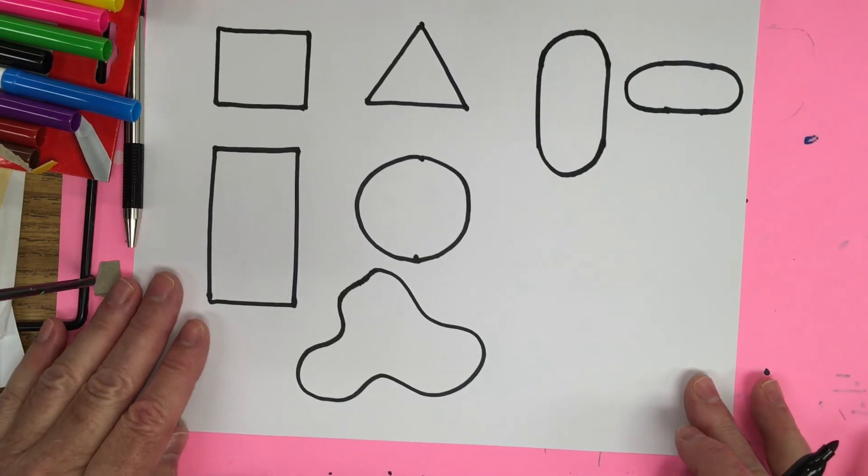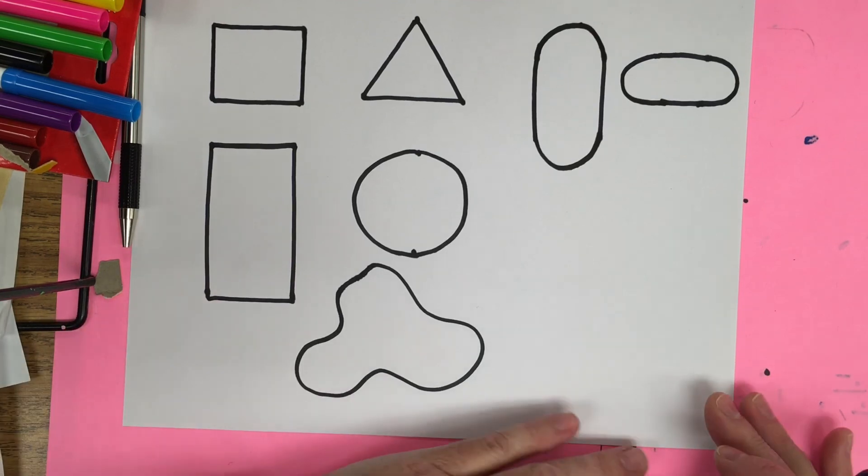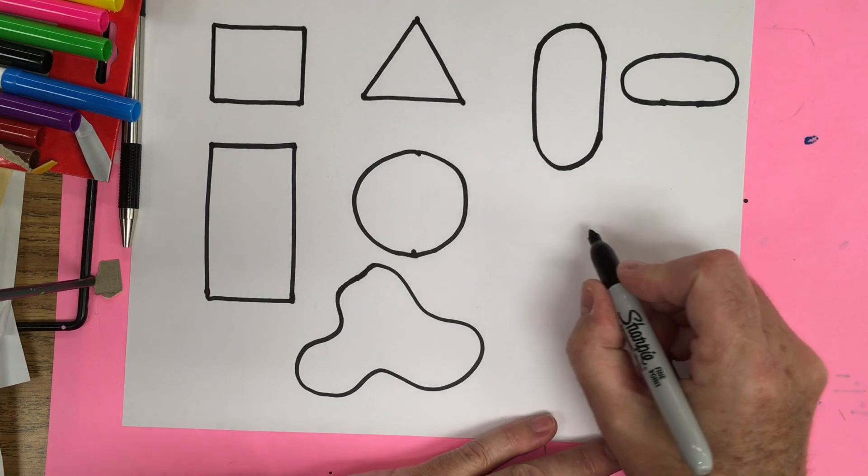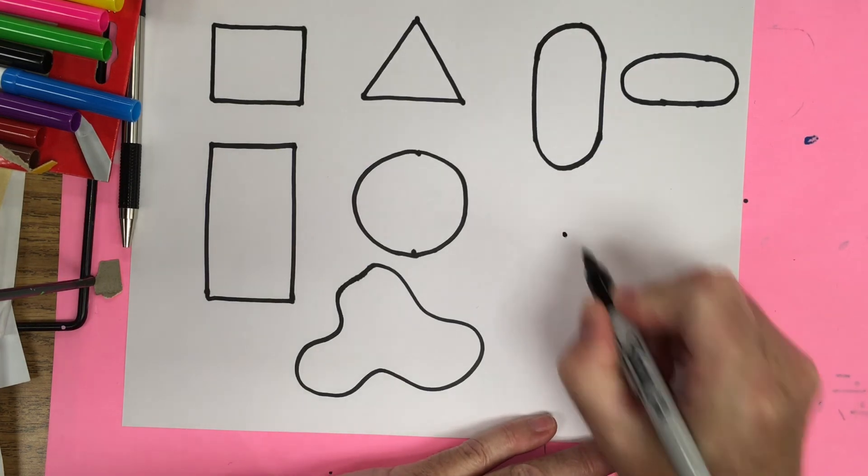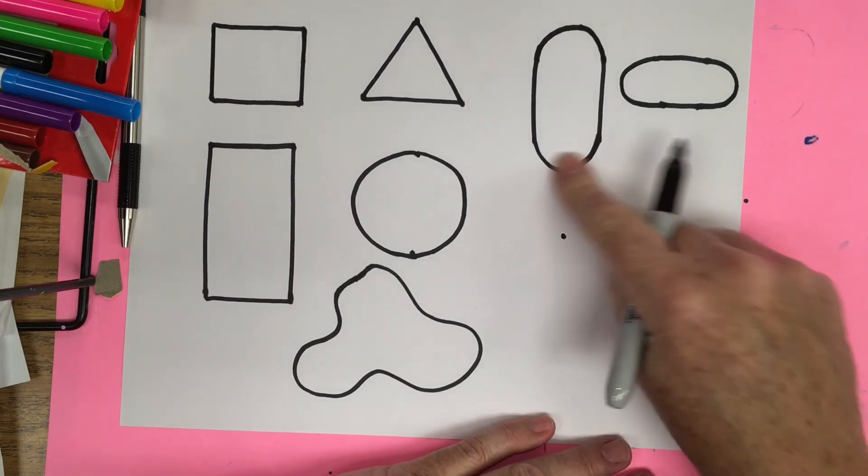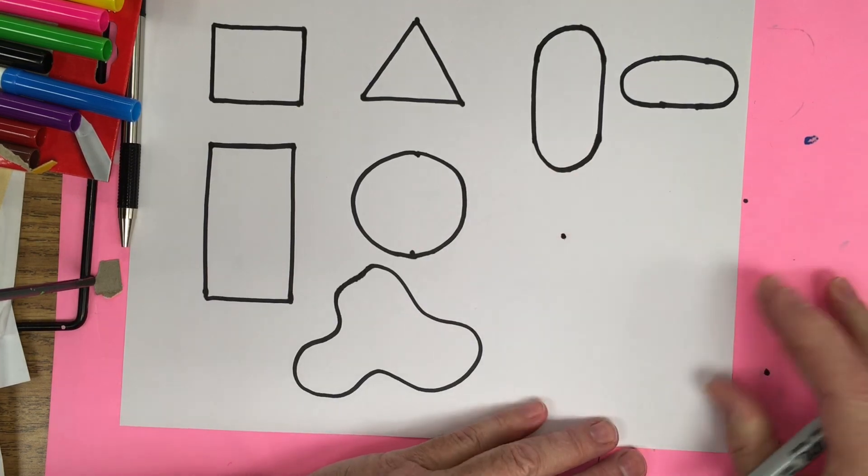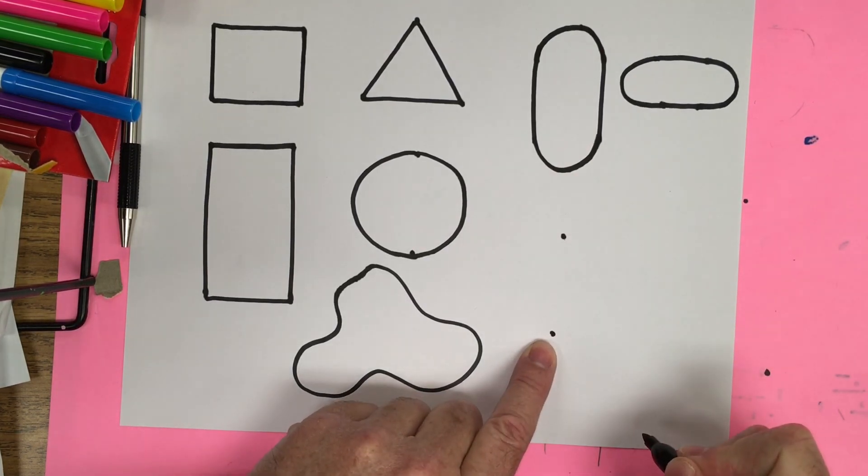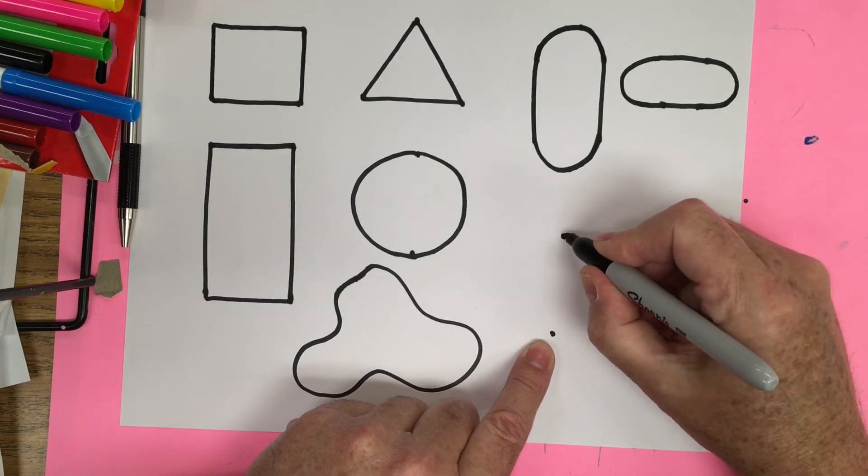Now I do want to show you how to make some other fancy shapes here. A lot of kids like using these. This one's going to be a heart. So for that, we're going to put a dot. Make sure you have a little bit of room up at the top here. And then drop straight down and put another dot.